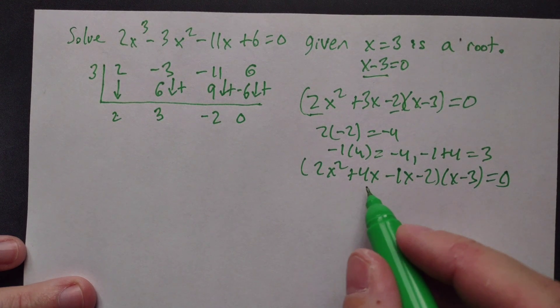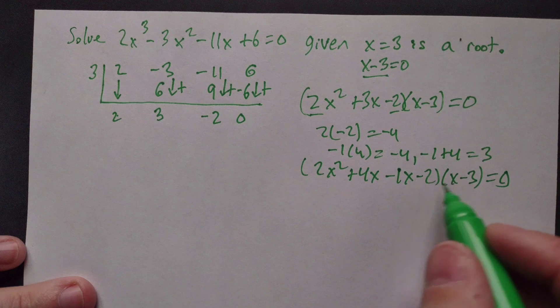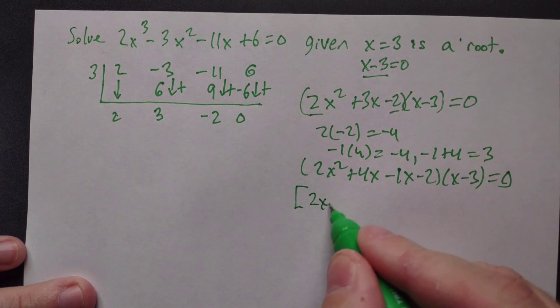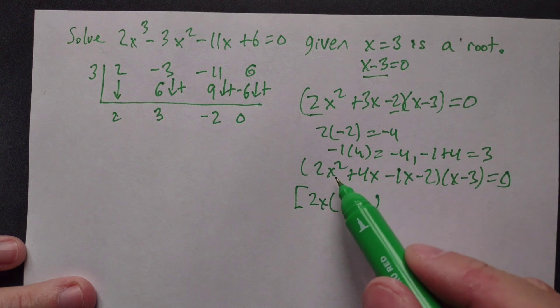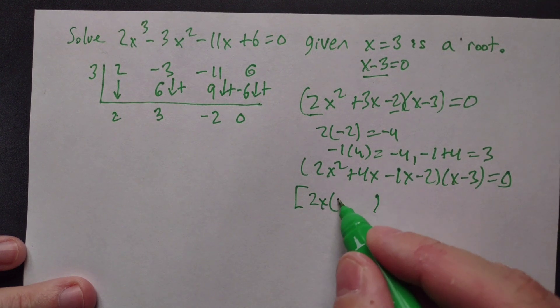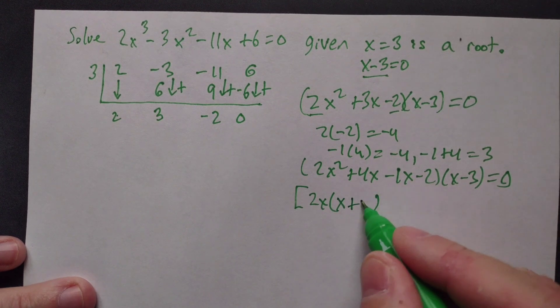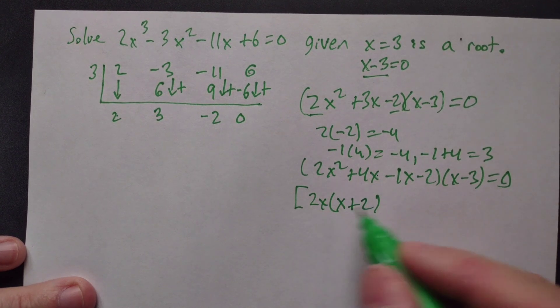Using factoring by grouping on 2x² + 4x, factor out 2x. 2x² ÷ 2x = x, and 4x ÷ 2x = 2, giving 2x(x + 2).